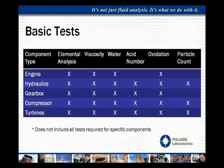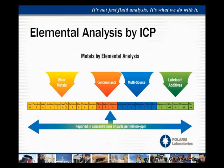Gearboxes have the same basic test package, but they do not necessarily require a particle count because gearboxes, as a function of what they are, tend to run a lot dirtier. So we don't necessarily need to know about the particles so much as we need to know more about the wear metals. Compressors require the same as hydraulics — tighter clearances and higher cleanliness requirements — and the same applies to turbines as well.